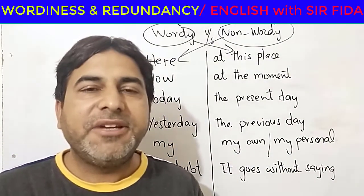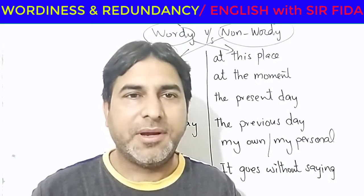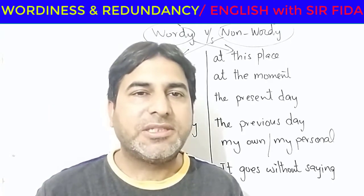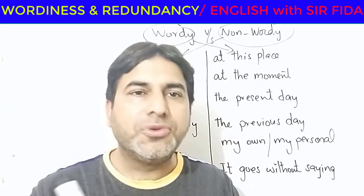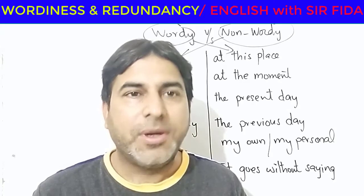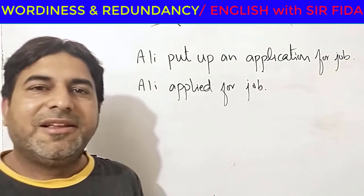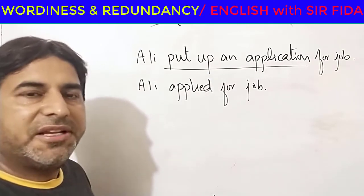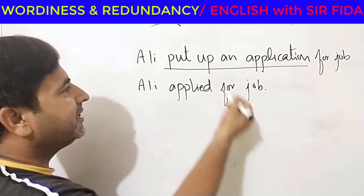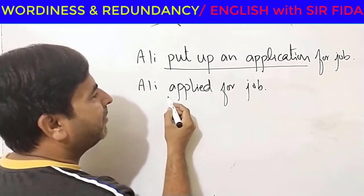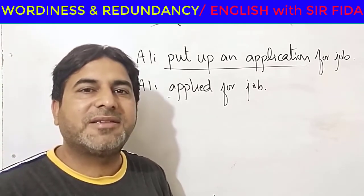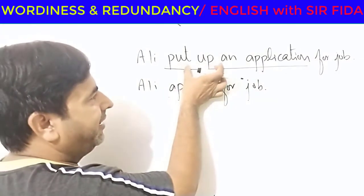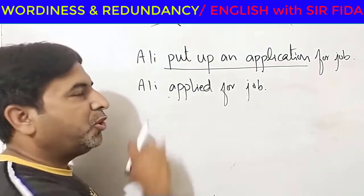You have to identify sentences where the idea is the same and reject or eliminate those sentences which have a slightly different idea, because wordiness can be assessed only between two sentences having the same idea. For example: 'Ali put up an application for a job' — the same idea is conveyed briefly as 'Ali applied for a job.' Both ideas are identical but the way of expressing them is different. The first is wordy style, which is an error; the second is non-wordy style, which is correct.